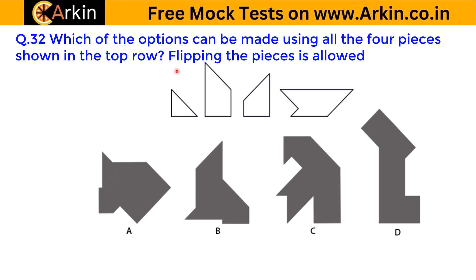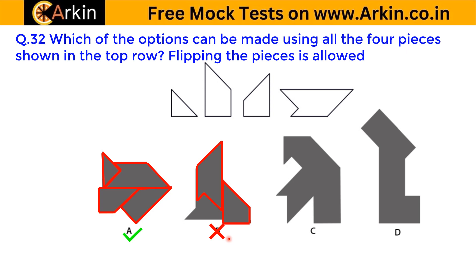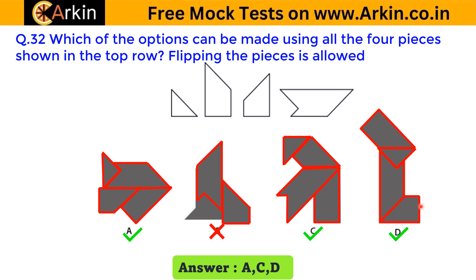Which of the options can be made using all four pieces shown in the top row? Flipping is not allowed. Visually, you have to do this in the exam. This looks like this piece, and then we can use all four pieces to create this pattern — so A is correct. Here, by looking only, it looks small — and if we try, this is here, this one, but we cannot accommodate two more pieces, so this will not be correct. Again let's try this one — it can be done, so C is also correct. For D also it can be done, so D is also correct.